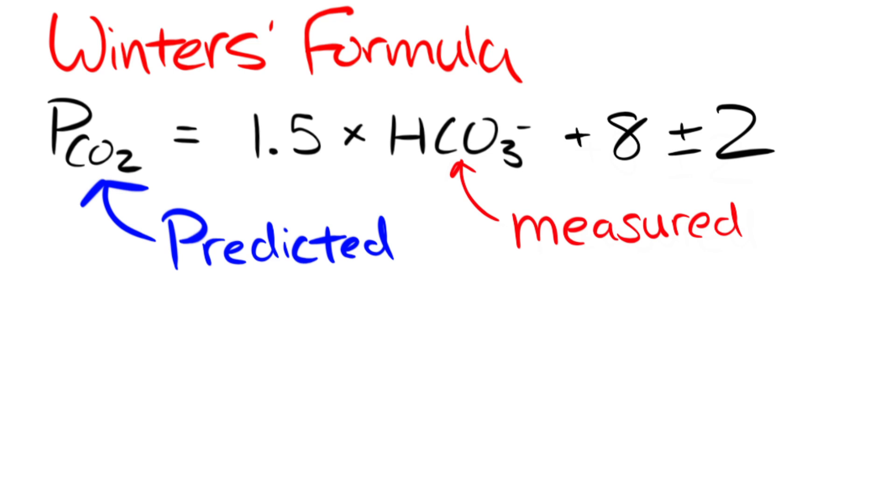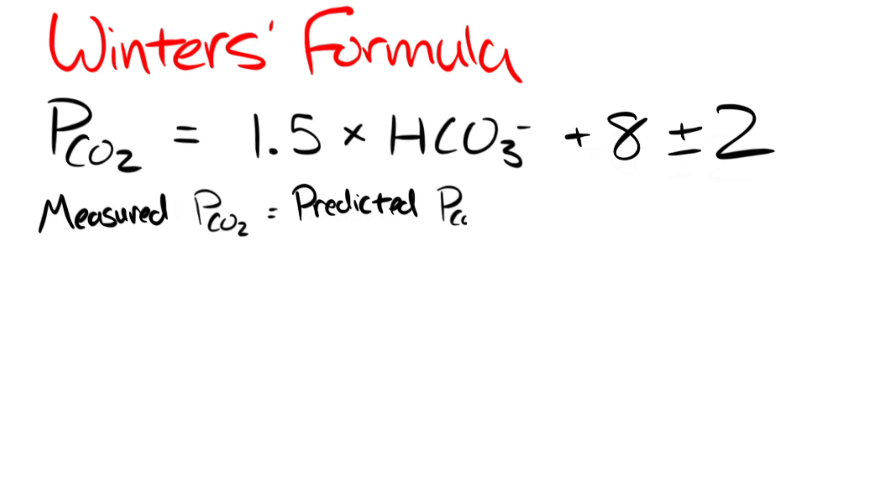At the tail end of our formula is a plus-minus-2 and all this means is that the true measured PCO2 can fall within a range of plus or minus 2 of what is calculated and that is still considered within the predicted PCO2. You'll see this concept better when we do our examples. Once you get your predicted PCO2, you can then compare it to your measured true PCO2 and this gives you three possible scenarios.